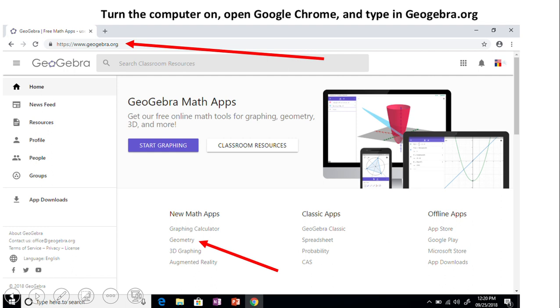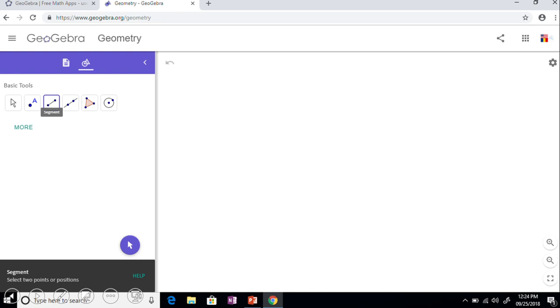I'm going to click on geometry and you should get this screen where you have two areas: this one where you have the tools and this one where we're going to do the work.